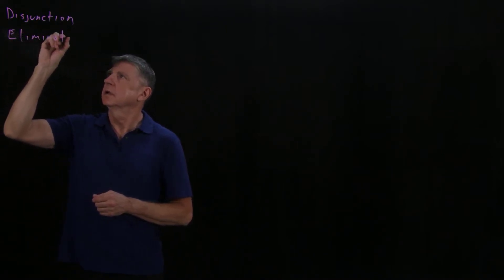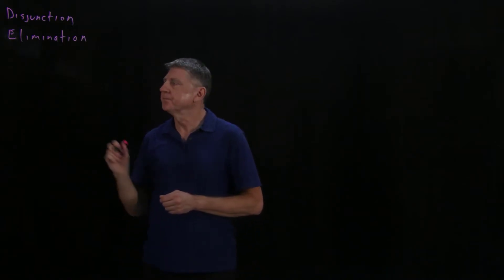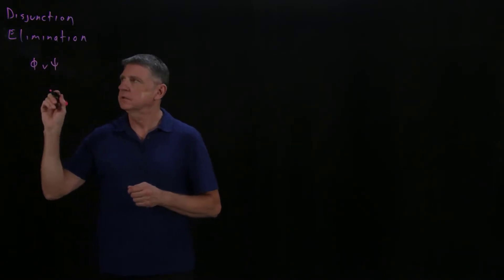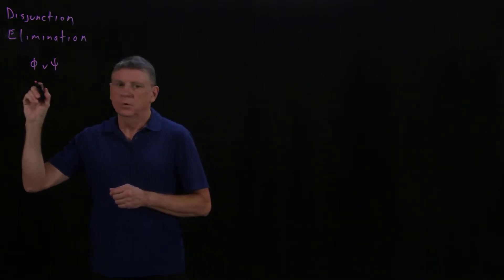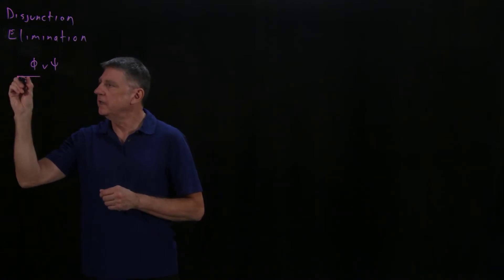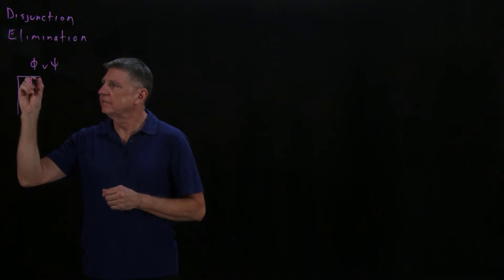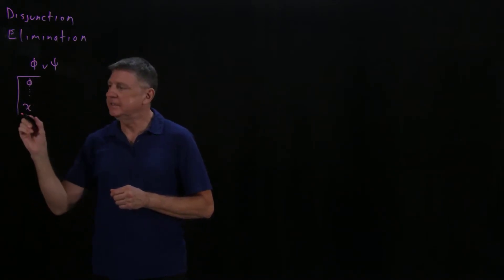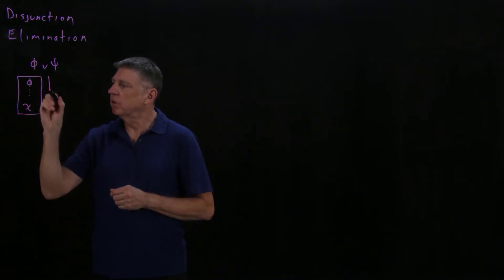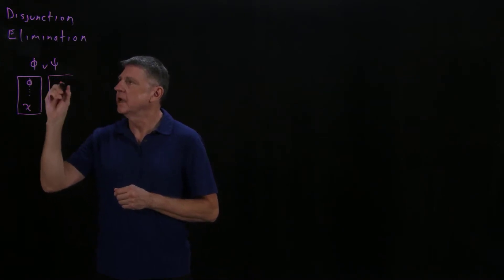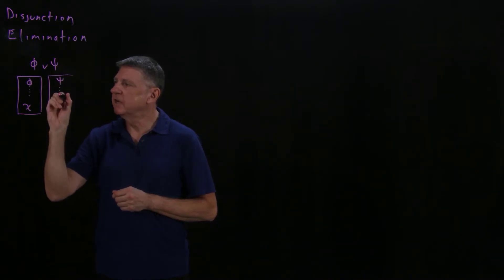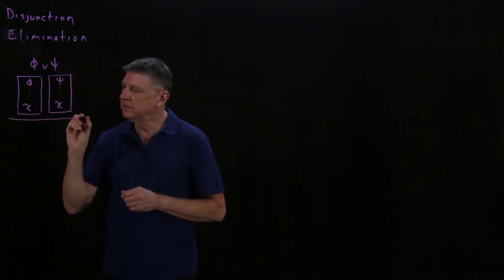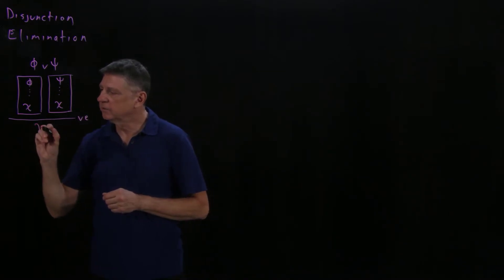This rule is employed when we see a disjunction. If we see the disjunction of two formulas as a single line, then if we open an assumption box for the left disjunct and are able to conclude a formula C, and if we also open a second assumption box beginning with the right disjunct and arrive at that same formula, we are able to conclude that formula using disjunction elimination.